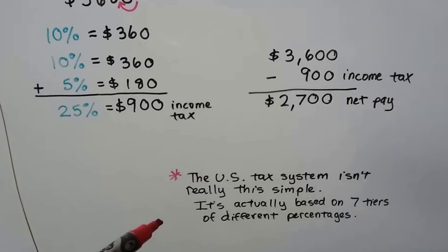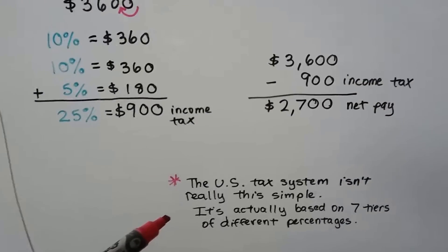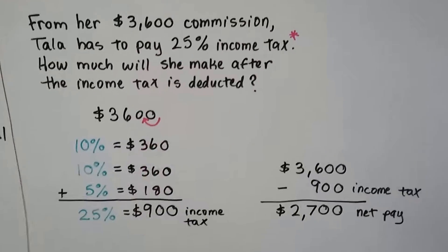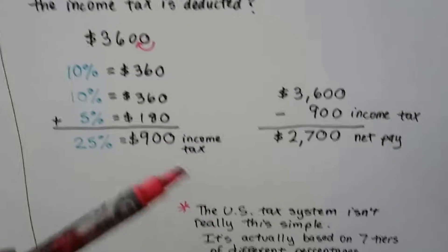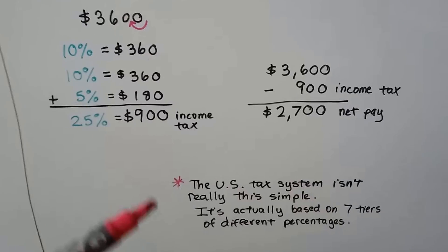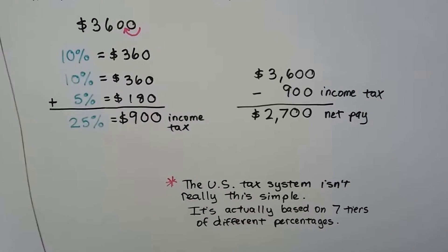Now the U.S. tax system isn't really this simple. It's actually based on seven tiers of different percentages, so it wouldn't be a straight twenty-five percent. That's not how it works. I'll actually have a link in the description for a cool website where you can look at all the different tax brackets.